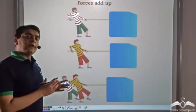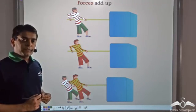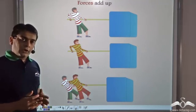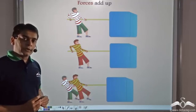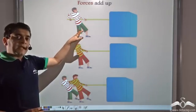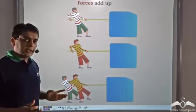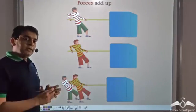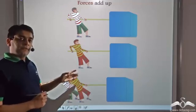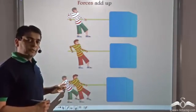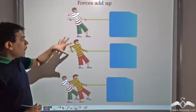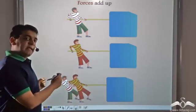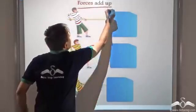What can we conclude from this experiment? Boy one was unable to make the box move by himself, and boy two was also unable to make the box move by himself. But when both boys pulled the box together in the same direction, they were able to move it. The magnitude of force applied by boys one and two individually was not sufficient, but when they pulled together, the combined magnitude was sufficient. Hence, when two or more forces act on an object in the same direction, the magnitude of the forces add up.